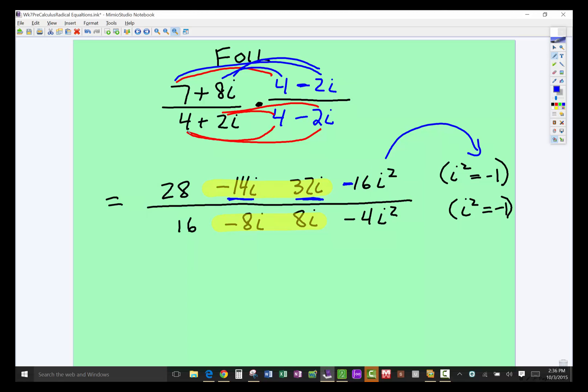But now let's go to the denominator. The first, 4 times 4 is 16. 4 times negative 2i is negative 8i. 2i times positive 4 is positive 8i. That's why we multiply by the conjugate. We get the i's out of the denominator. And then the two last, 2i times negative 2i is negative 4i squared. And again, we'll have to simplify the i squared in a moment.